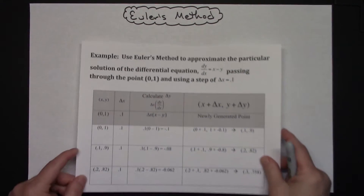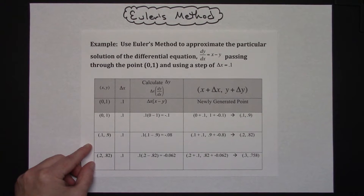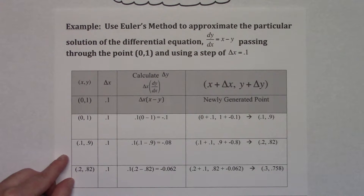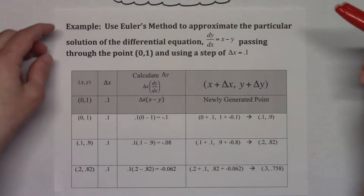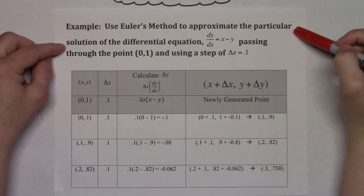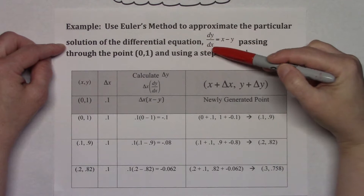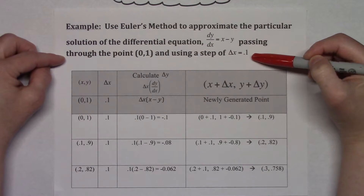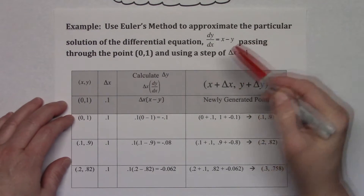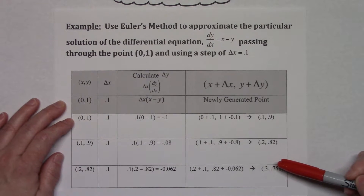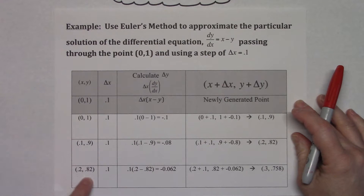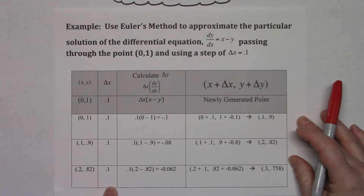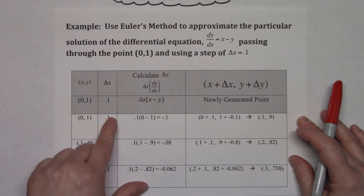For my first example, there's a lot of arithmetic to it, so on this first one I've already worked it out. Let's zoom in so we can see those numbers. In this particular example, we're going to use Euler's method to approximate the particular solution of the differential equation dy/dx equals x minus y, passing through the point (0, 1), and using a step delta x equal to 0.1. I find it really helpful to make a little table. I start with a column for my point, a column for my delta x — which in our examples is going to remain the same.